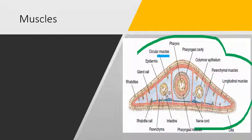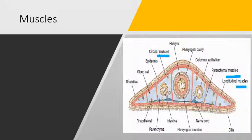There are three kinds of muscles found in the Turbellaria: circular muscles, parenchymal muscles, and longitudinal muscles. The circular muscles are found on the outer side, and longitudinal muscles are found inner to the circular muscles.